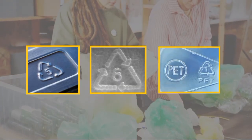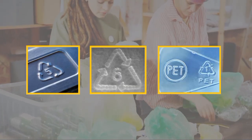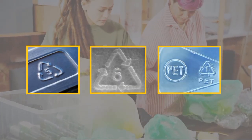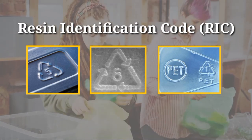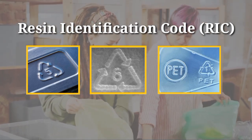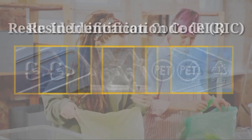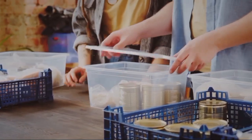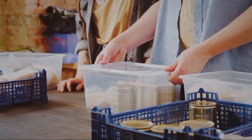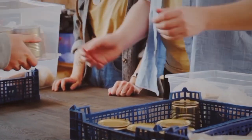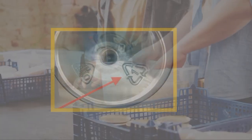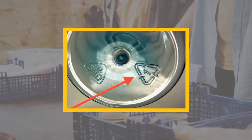Have you encountered these symbols? Those little numbers with arrows around them are called Resin Identification Codes, or RIC. They indicate the type of plastic or resin that an item is made from. If you're observant enough, you will notice that they are present on the bottom of most plastic containers out there.